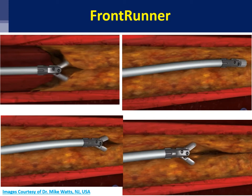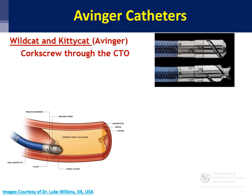Along those lines, the alligator forcep device called the Frontrunner looks like forceps — but you're not biopsying tissue, you're actually spreading it. You advance the forceps, spread the occlusion or CTO, move the catheter forward, spread again — the idea being that you stay true lumen, not subintimal.